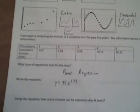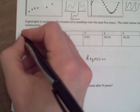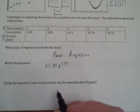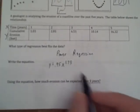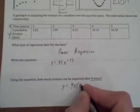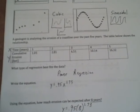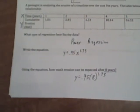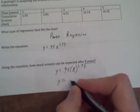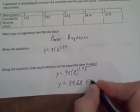Now once we have that we'll be able to answer the next question. Keep in mind that time is x and erosion is y. Using the equation, how much erosion can be expected after eight years? Well years is time so that must be x, so y equals 0.95 times 8 to the 1.73. We'll type that in the calculator and our answer is going to be in terms of feet: 34.68 feet.